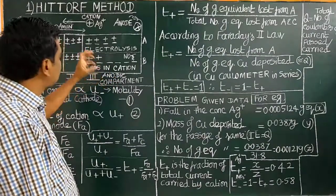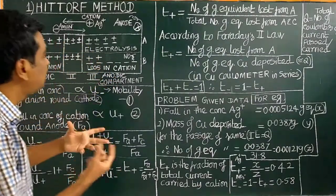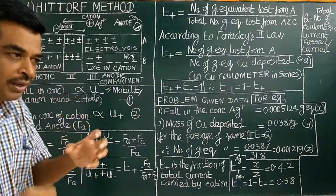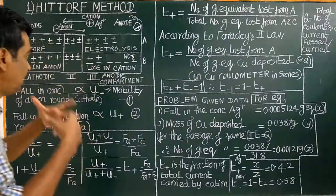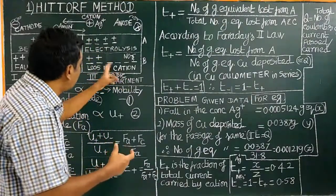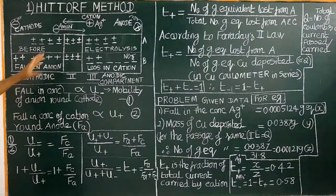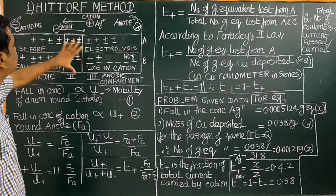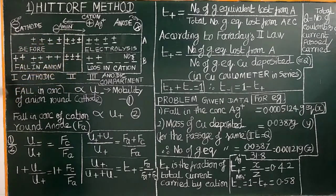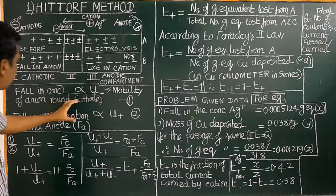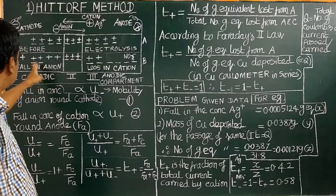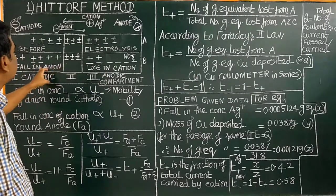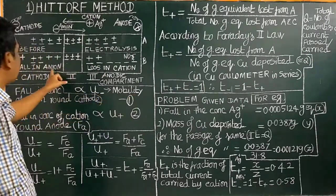This loss or fall in cation concentration is directly proportional to the mobility or speed of the ion. If the mobility is greater, there will be more loss — a larger fall in cation concentration. There is no change in the middle compartment. The falling concentration of anion around the cathode is directly proportional to the ionic mobility U−.